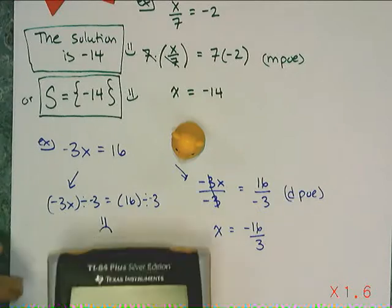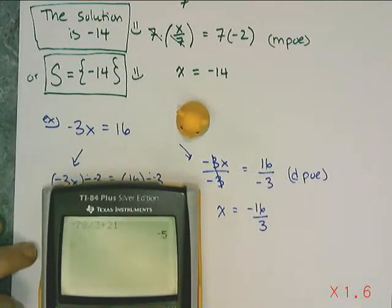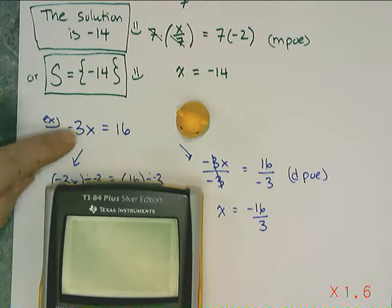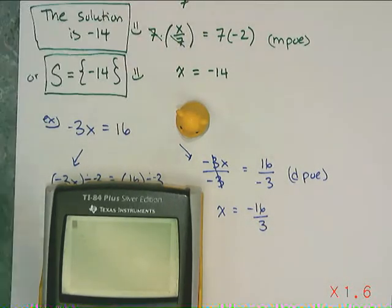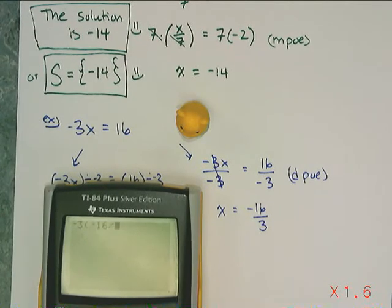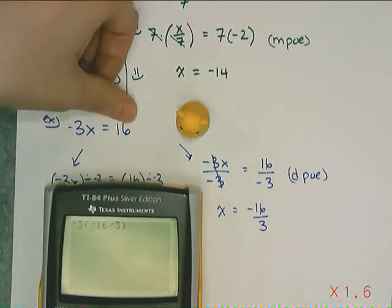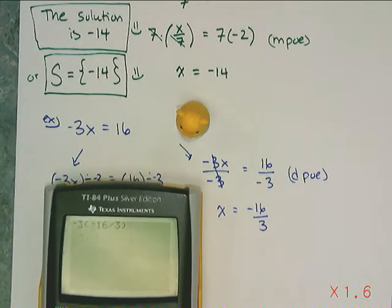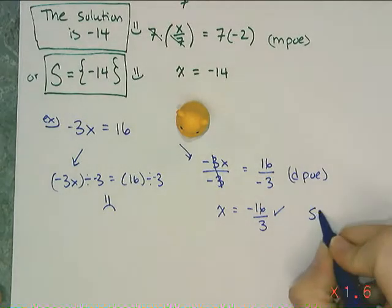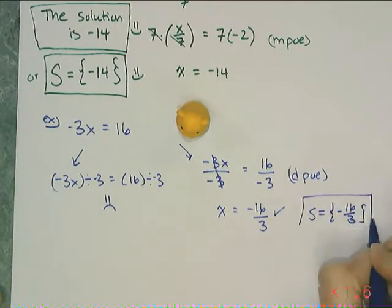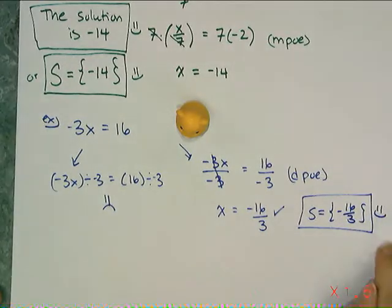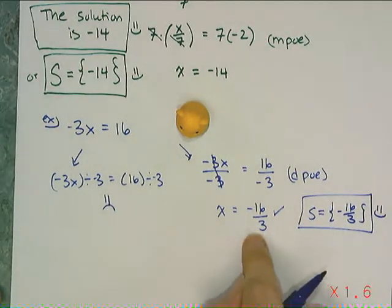Here's how I want you to check these on the calculator: type in one half of the equation where x has been replaced with your answer. So negative three times negative sixteen divided by three — that better give me the other half, which is sixteen. And it does. So that means I checked it and it's correct. I can write my solution in solution set notation, put a box around it, and happy face it — knowing that happy face is deserved because the answer is correct.